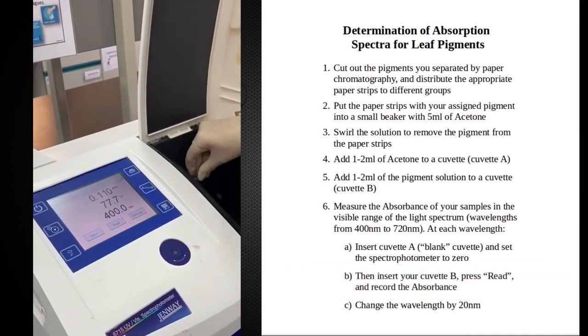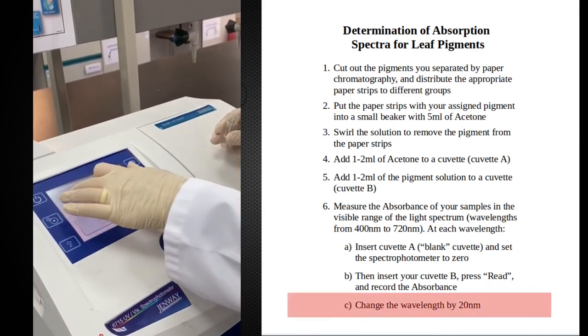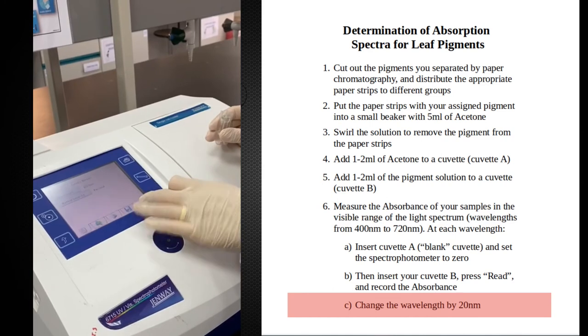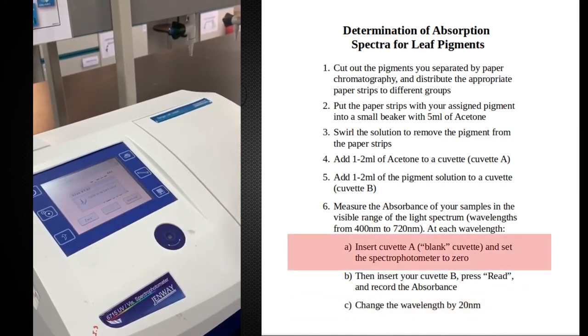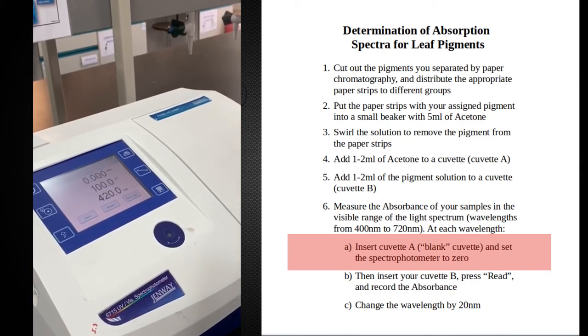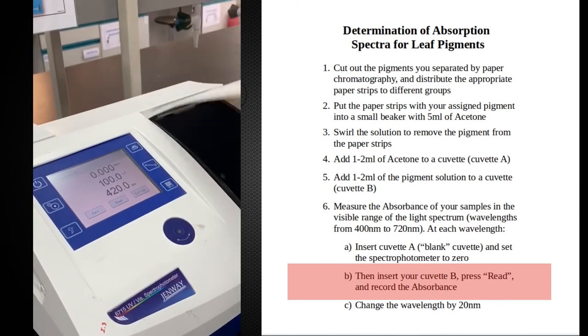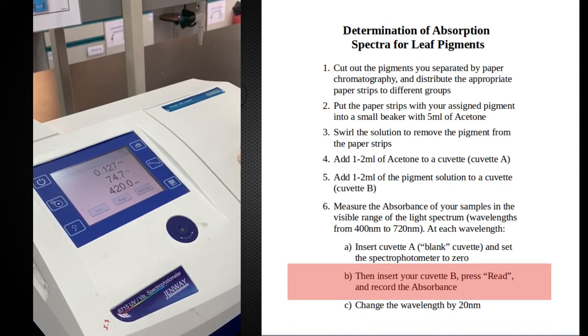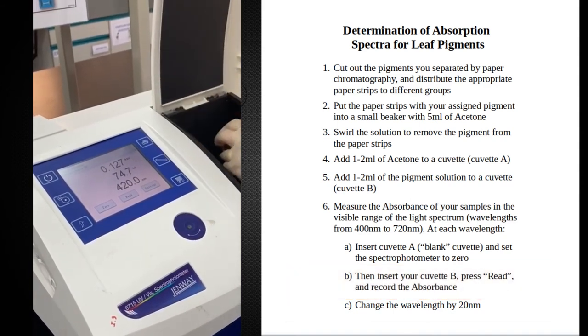I reinsert the acetone, change the wavelength, 420 is the next reading. Calibrate my spectrophotometer and then this is chlorophyll B again. Second reading is 0.127. I continue the same process.